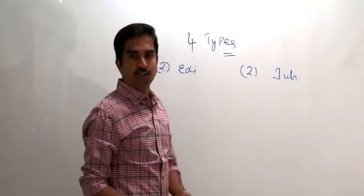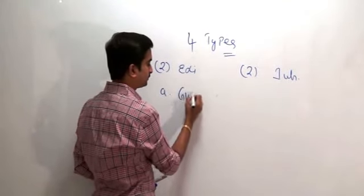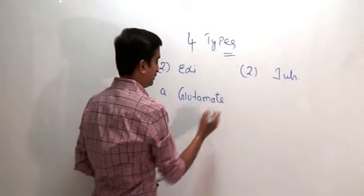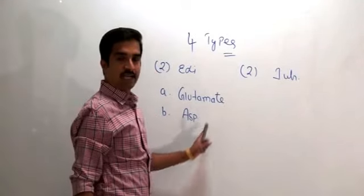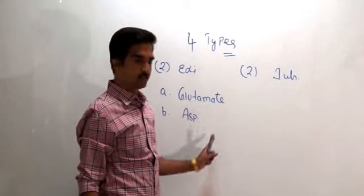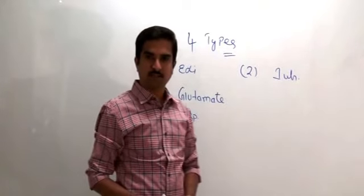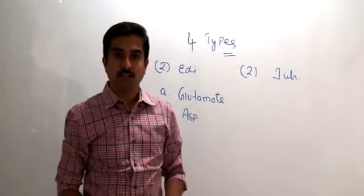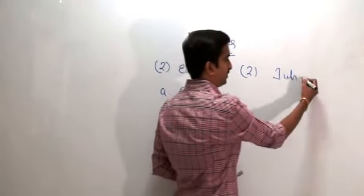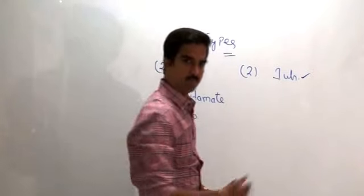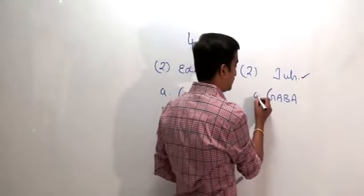The excitatory neurotransmitters are glutamate and aspartate. These are known as excitatory neurotransmitters of the CNS, capable of exciting or depolarizing neurons. The inhibitory neurotransmitters of the CNS are GABA and glycine.